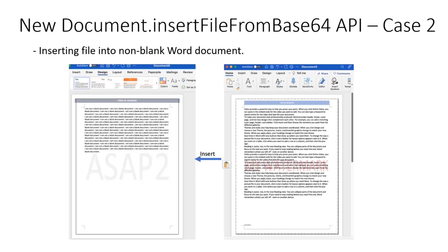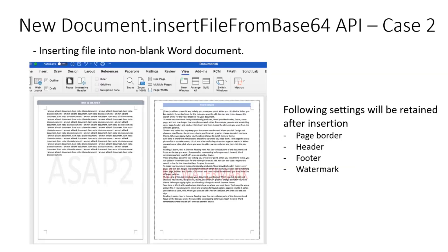If the target document is not blank — meaning it also contains different page borders, footers, headers, and those settings — then after the insertion, we will create a new section, and the new section will keep the source document's settings. As shown in the result picture, if the user appends the source document content into the target document, those page borders and header things will be kept and appended into the document as well.